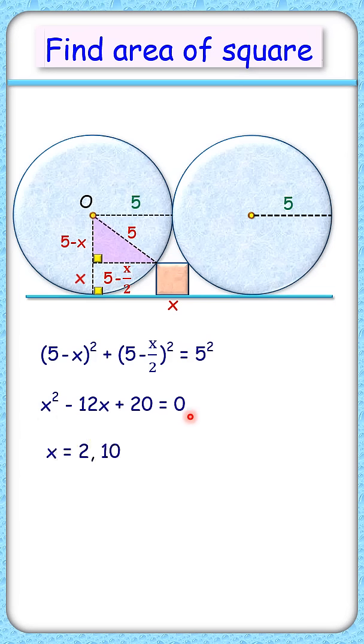Solving it will get x as 2 or 10 but 10 is not possible and thus x is 2 cm and area of this square that's 4 cm square and that's our answer.